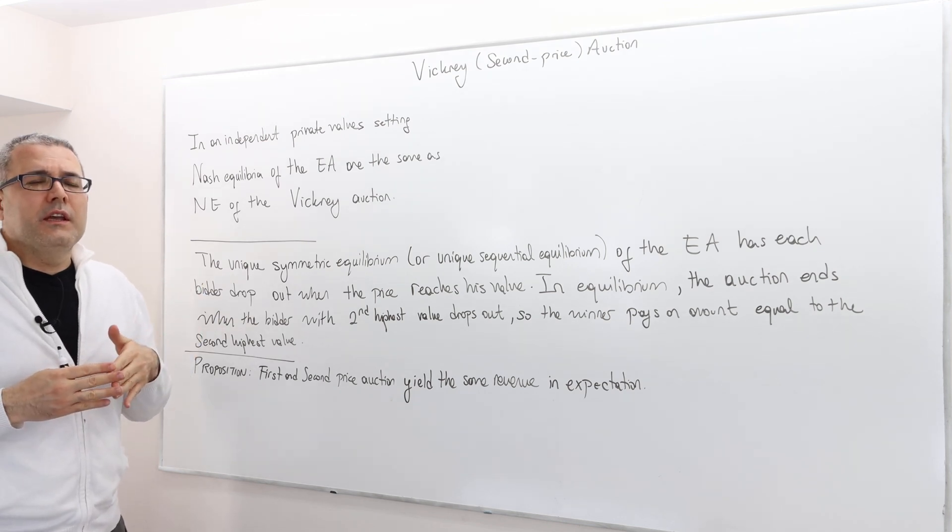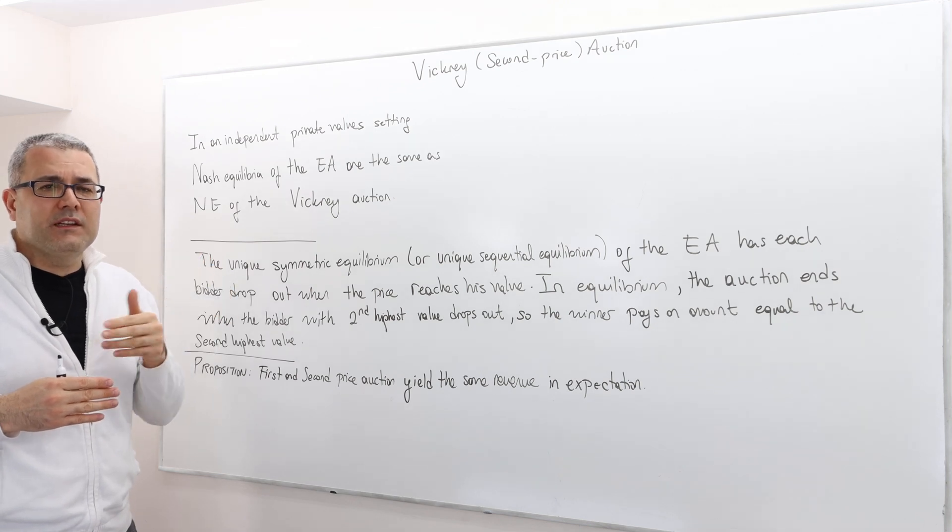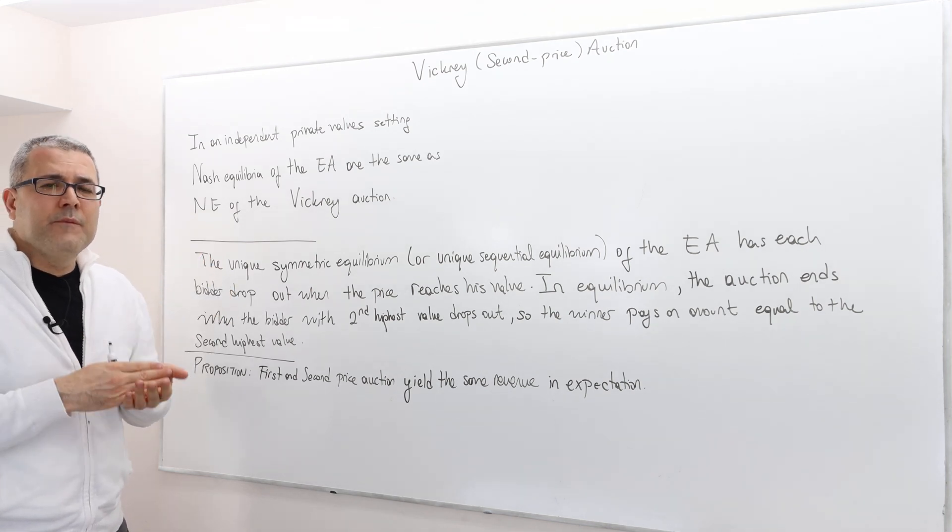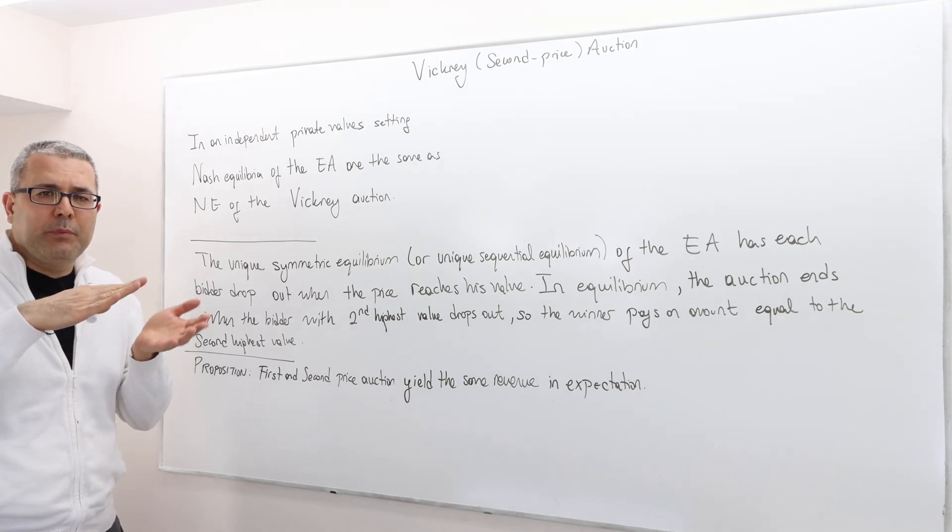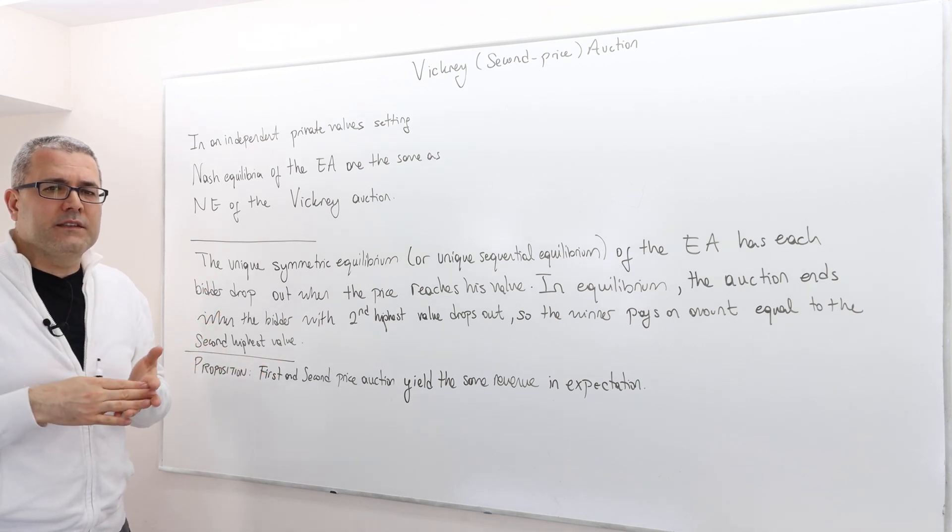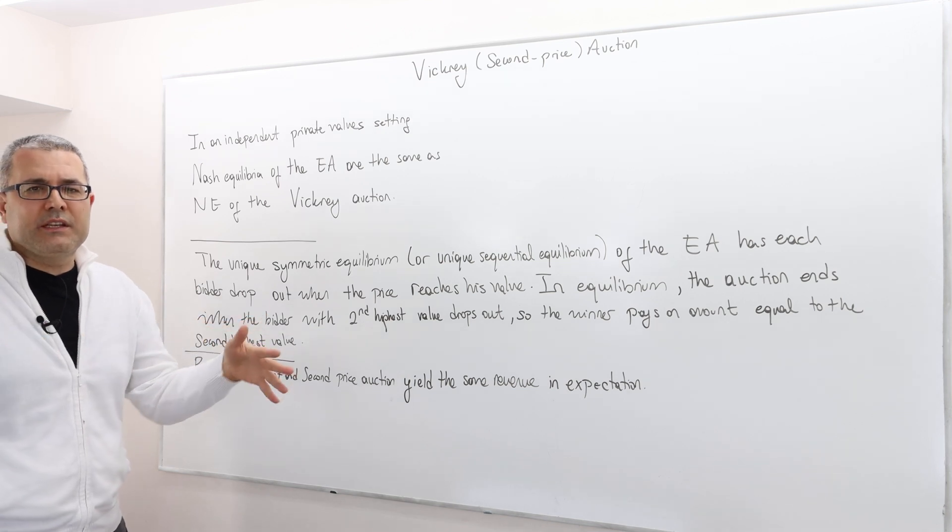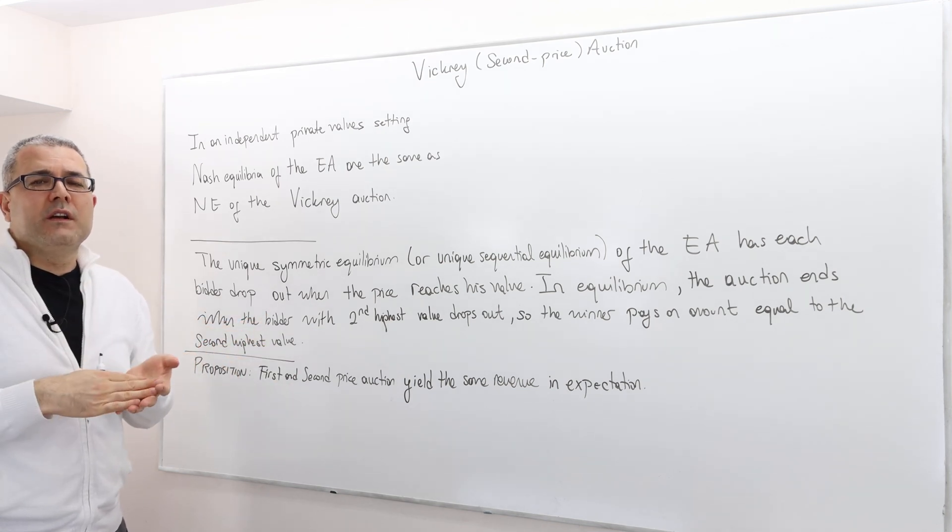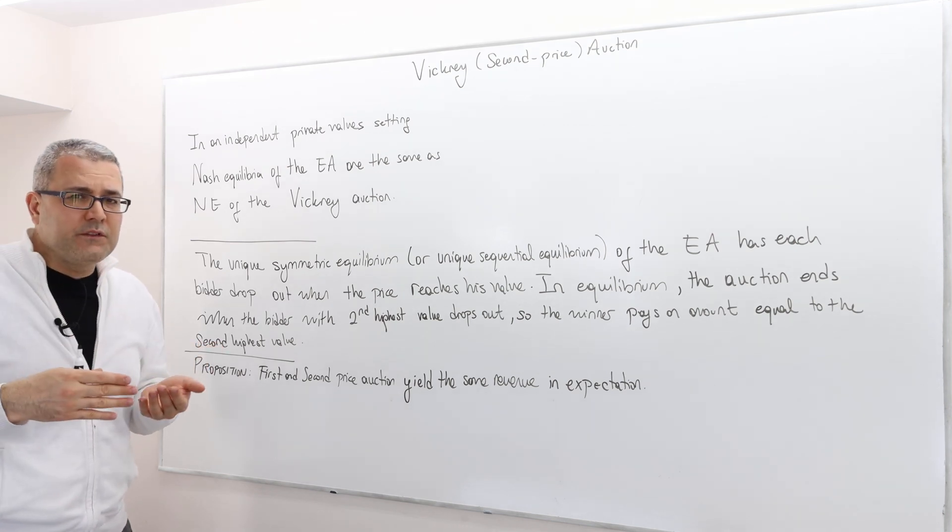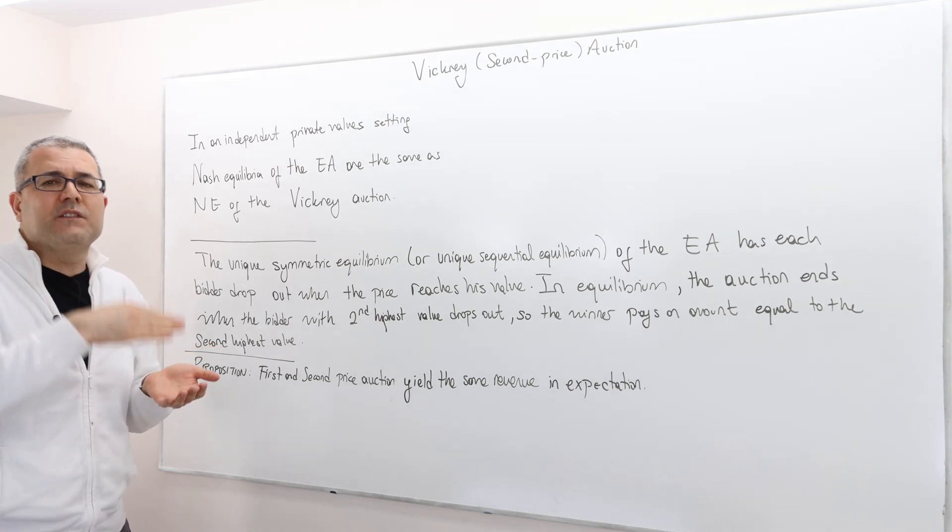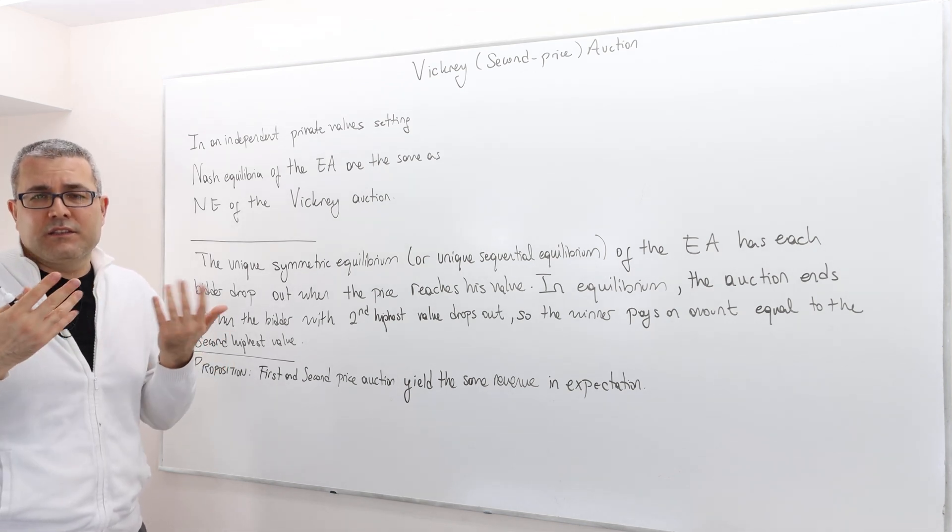Once again, the Vickrey auction is the one where the highest bidder wins, however he pays the second highest bid. And the English auction is an open bid auction where everybody starts bidding, everybody can observe everybody else's bids. And then as the bids increase, some bidders exit. Whoever remains in the auction wins the object, and he pays the last announced bid, which is basically the highest losing bid.